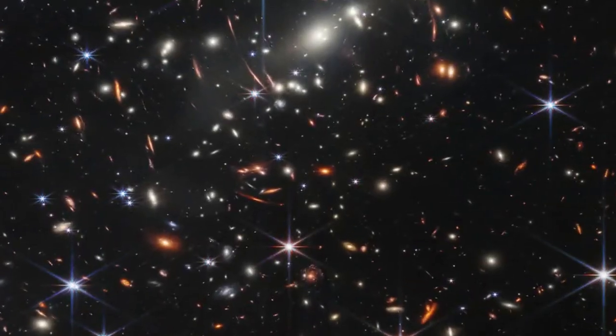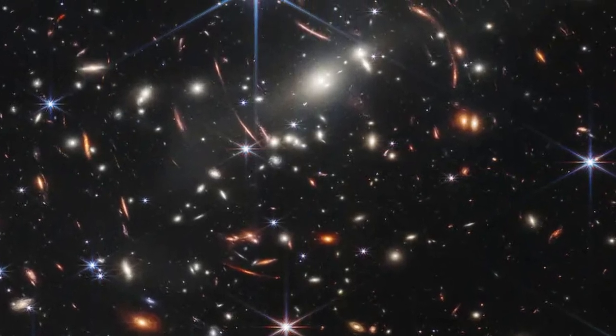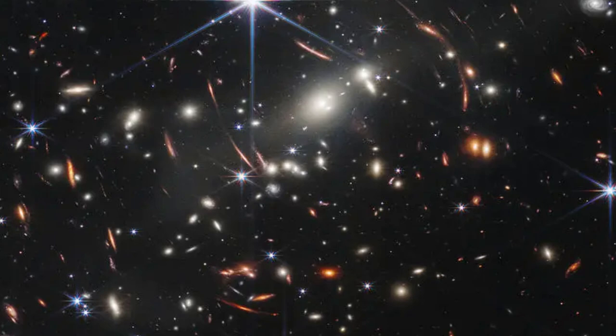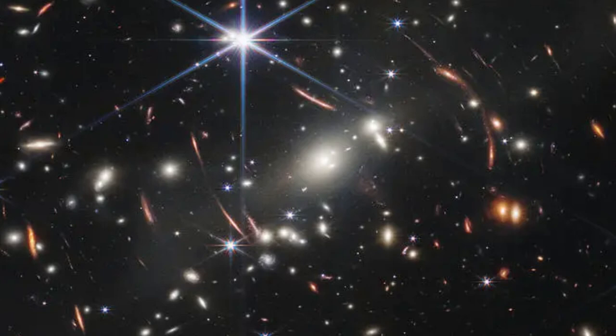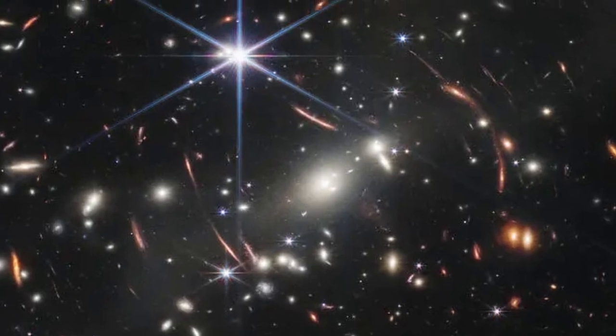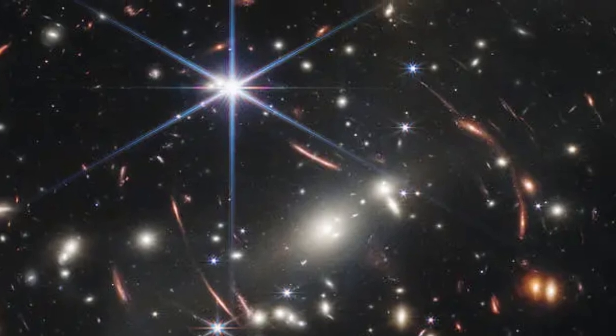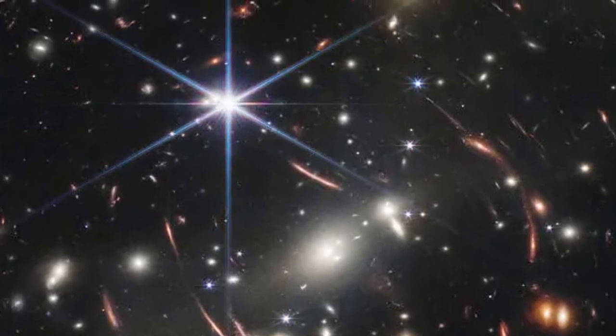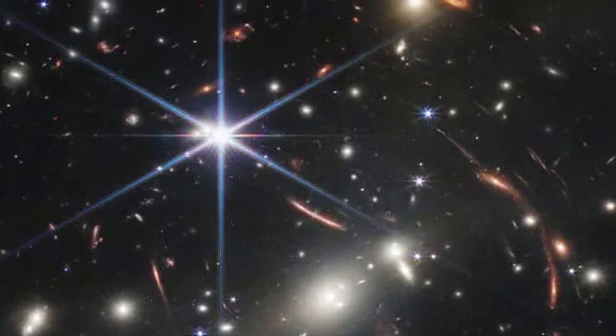To comprehend this phenomenon, let's scrutinize the deep-field image captured by Webb's MIRI instrument. This panoramic view of the cosmos showcases vibrant spiral galaxies in the foreground and an abundance of significantly older galaxies in the distant backdrop. Nearly all these entities are galaxies.